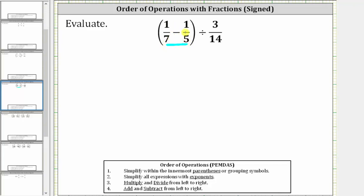We begin by writing 1/7 and 1/5 as equivalent fractions with the denominator of 35.